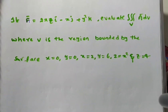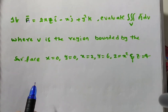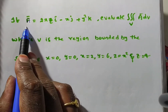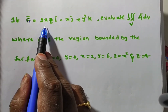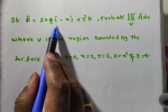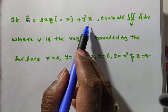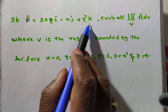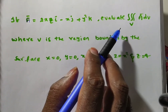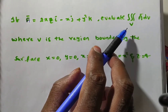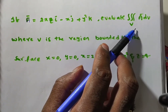Hi friends, in this video we are solving a problem on volume integral. The given problem is: if a-bar is equal to 2xz·i minus x·j plus y²·k, then evaluate the triple integral over volume V of a dv.